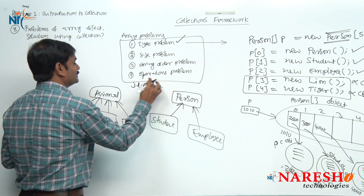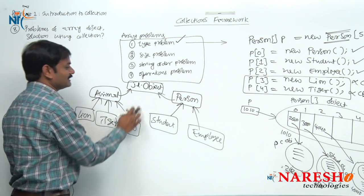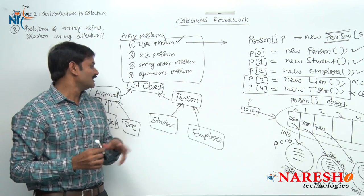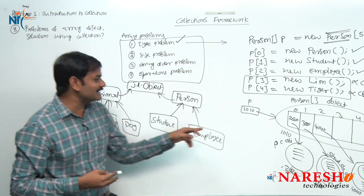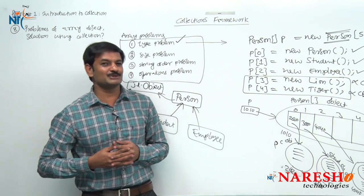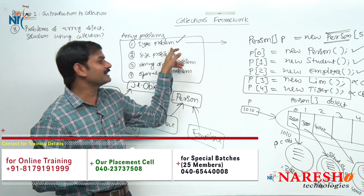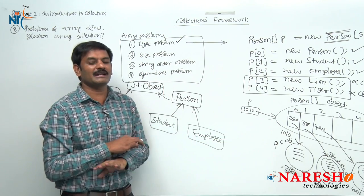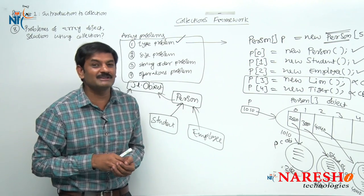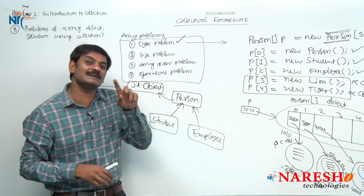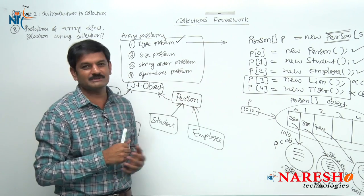If I create a java.lang.Object class type array, then all these classes — Person, Student, Employee, Animal, Lion, Tiger — are subclasses of Object. Object array internally creates Object type referenced variables. Then we can store any class object. So if I create a java.lang.Object array, the type problem is solved. Let us see one program for this.